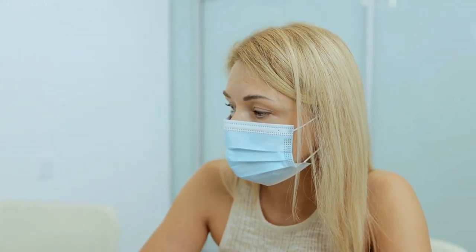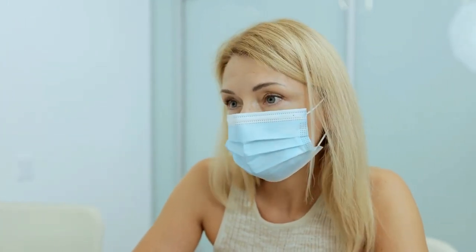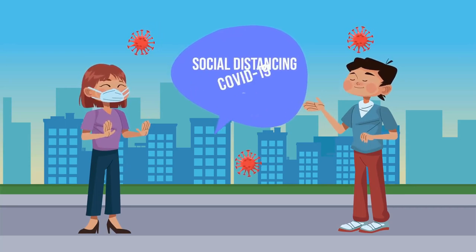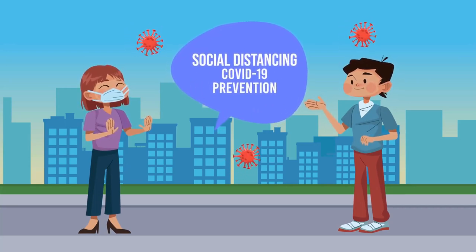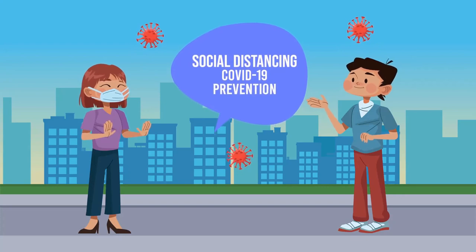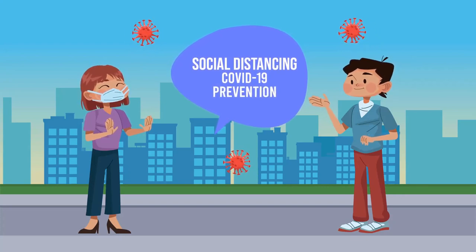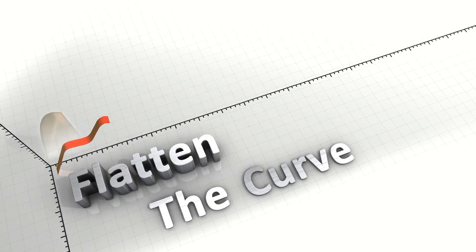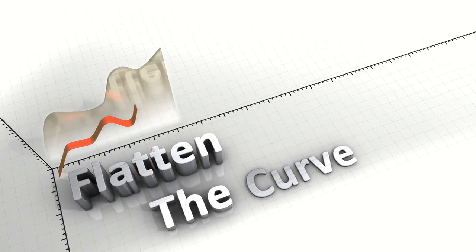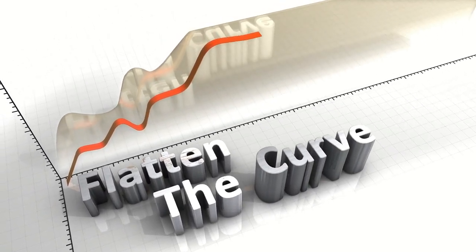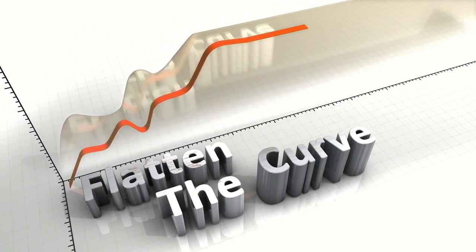This information guides the development of targeted interventions and prevention strategies. Fourth, evaluation of interventions: surveillance and epidemiology play a crucial role in evaluating the effectiveness of public health interventions. By comparing disease rates before and after the implementation of interventions, researchers can assess their impact and make evidence-based recommendations.